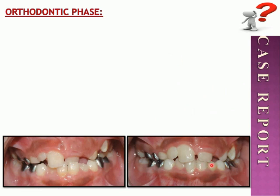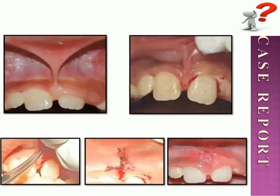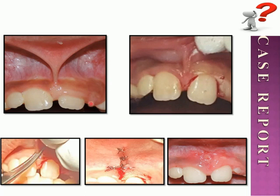After crossbite correction, the gingiva was still hypertrophic with a pocket of approximately 9 millimeters. After performing a labial frenum examination and blanching test, we decided to perform both gingivectomy and frenectomy in the same appointment, to prevent food impaction and pouching. The treatment area was simple and manageable for this patient.